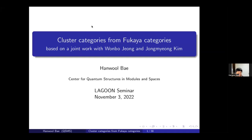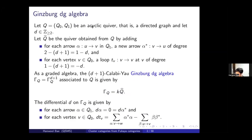I'm going to talk about some cluster categories arising from Kaya categories. This is based on a joint work with Won Bo Jung at Seoul National University and Jong Myung Kim at IBS 3GP. Let me begin with Ginzburg's algebra. Q is a quiver — a acyclic quiver, which means it is a directed graph without any cycle. Q0 denotes the set of vertices of Q, and Q1 is the set of arrows in Q.